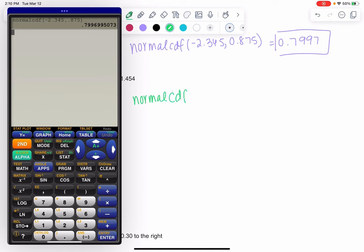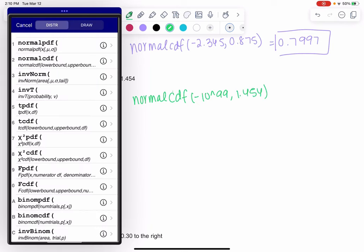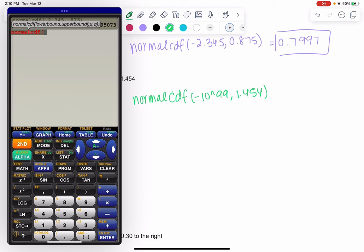It's always two points, the lower and the upper. So normal CDF, negative 10 to the 99 is our trick for infinity, up to 1.454. Second distribution, CDF. And we get an area of about 0.927.